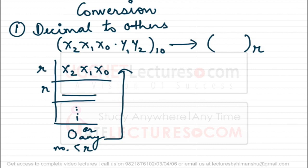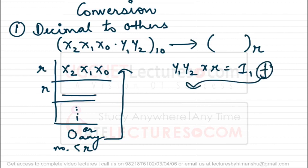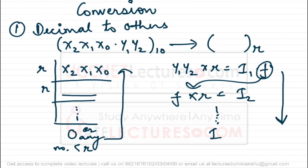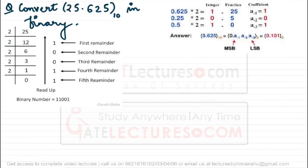For the fractional part, you multiply it repeatedly by r. When you multiply the fractional part by r, you get some integral part and some fractional part. You take that fractional part and multiply again with r, continuing until you get a complete integer. You then read the integral parts from top to bottom — the top is the MSB and the bottom is the LSB of the required fractional part.